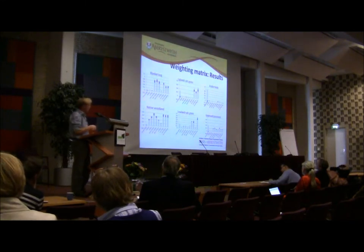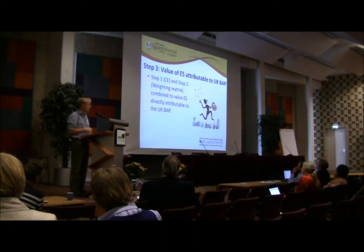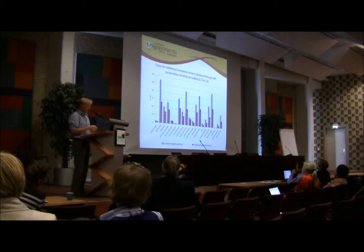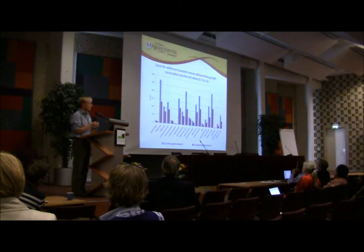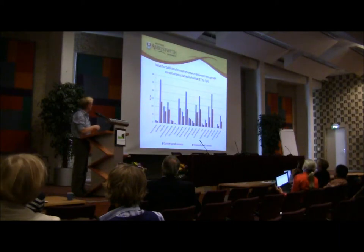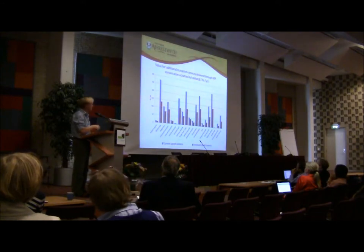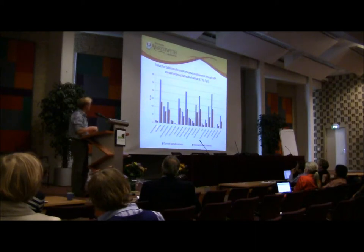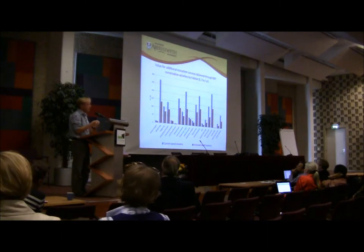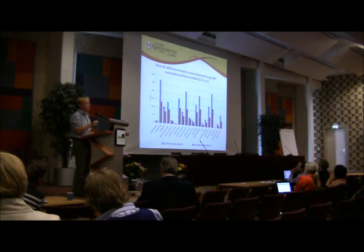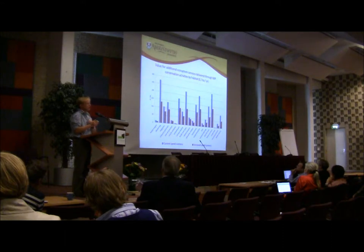Obviously different habitats deliver different levels of services. Combining the two sets of information, we get a graph showing pounds per hectare per year that different habitats provide for service delivery. The blue lines are the current levels of service delivery under habitats, and the red lines show what extra services would be delivered if we improve the level of protection. The winners are things like blanket bogs, moorland, heathland habitats, and woodland. Much of the driver for these values is climate change, carbon storage, and water regulation — these are the key drivers of services.